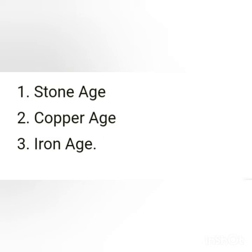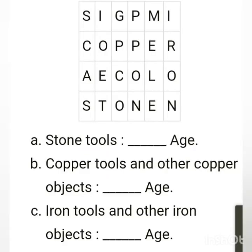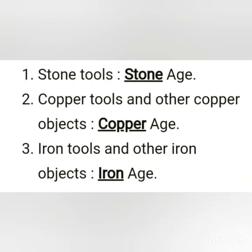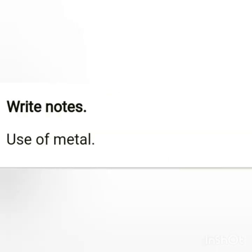You have a chart in front of you and have to write the answers. Stone tools belong in the Stone Age. Copper tools and other copper objects belong in the Copper Age. Iron tools and other iron objects belong in the Iron Age.